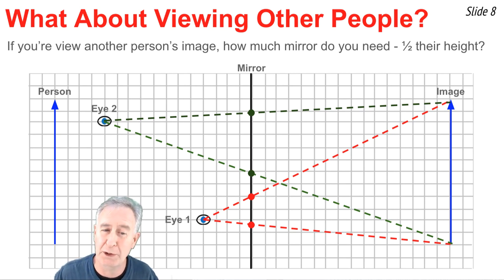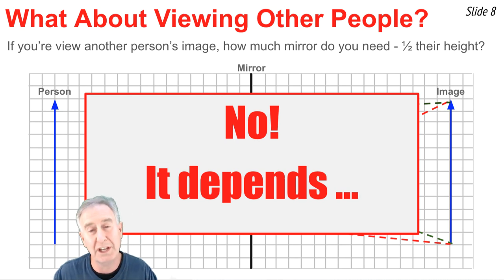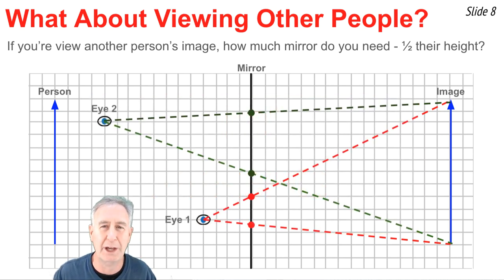with two lines of sight to the top-most and the bottom-most extremes of that image of the person we're looking at and then we locate where the intersection points are and we count our squares and we say, hmm, it's a different number of squares. So the question is, how much mirror do you need? Is it always half the person's height if you're viewing another person? And the answer is no. In this case, it does depend upon where you put the eyeball location in the person. It varies with distance.